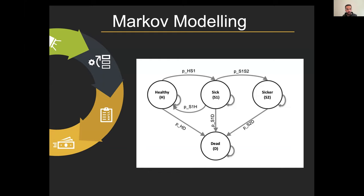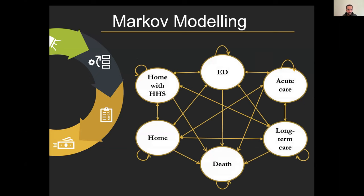Unfortunately, that approach wouldn't really work for our purposes in this economic learning health system deployment, just because there were so many patients with so many different diseases and comorbidities. We had to flip that on its head because we needed a model that was agnostic to the disease and able to simulate different interventions — ultimately any intervention the health authority was thinking about for this patient population. So instead — and I've found a couple of other folks who have used the same approach — we had states of: at home with home health service, in the emergency department, in acute care, long-term care, and death. Using the administrative data sets from the health authority, we were able to populate all the different transition probabilities and costs associated with each state, and then we imputed the utilities.